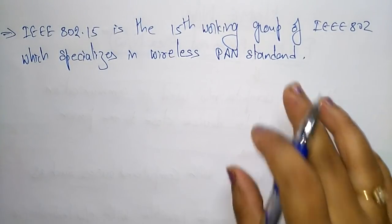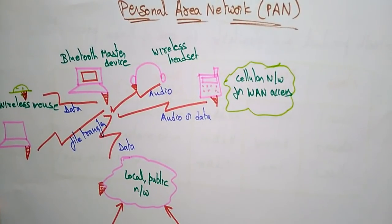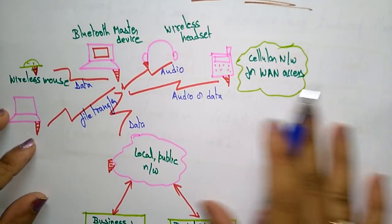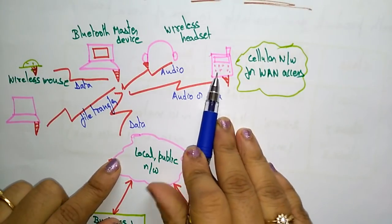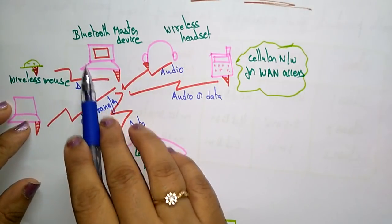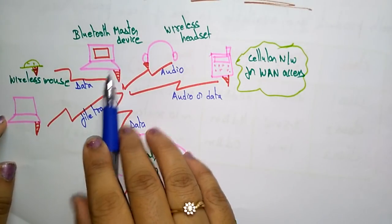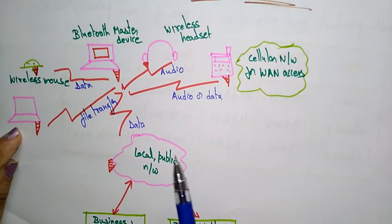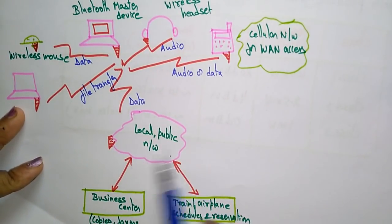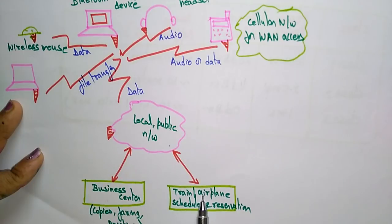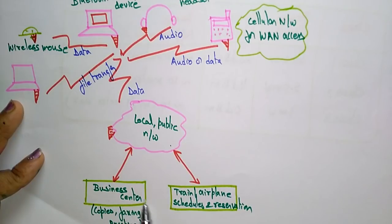Let me explain how a Personal Area Network is established within a house. Suppose in your home you have a cellular mobile phone, a wireless headset for listening to songs, a PC with a Bluetooth master device activated, and a wireless mouse connected to another PC. There is also a local public network communicating with business centers, train reservations, and business communications like faxing, printing, and shopping.